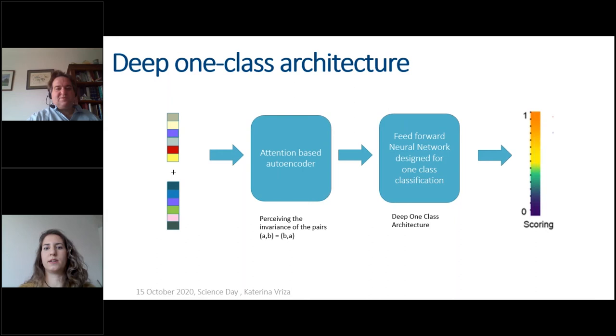The deep one-class architecture is quite similar but instead of feature engineering we used an attention-based auto encoder which was able to extract the invariance between the pairs so that the pairs are equivalent. And then we connected that to a feed-forward neural network aiming for one-class classification and that again gave a score from zero to one.